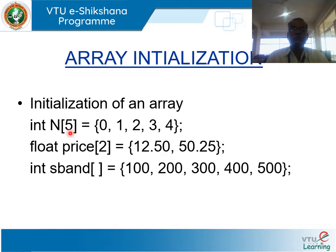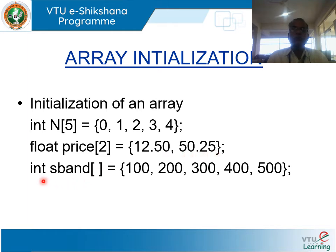Array initialization. Arrays can be initialized in different ways. For example, int n[5] = {0, 1, 2, 3, 4} — n is an array containing 5 integer elements initialized in curly brackets, separated by commas. Another example: float price[2] = {12.50, 50.25}. One more way is to initialize without specifying the index size — the index is determined by counting the number of elements present in the initialization.